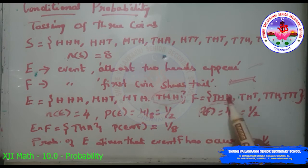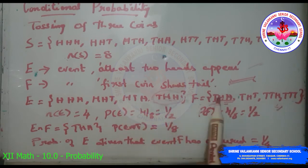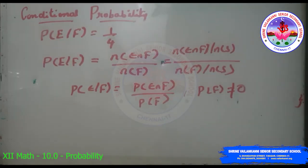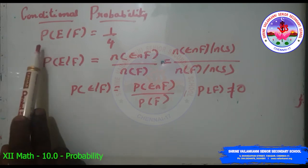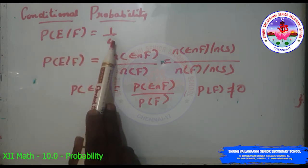The elements in F are 1, 2, 3, 4 (four outcomes). The common element between E and F is THH, which is 1. So the probability of E considering F as the sample space equals 1/4. This probability of event E given that event F has occurred is called conditional probability, denoted P(E|F). We got P(E|F) = 1/4.